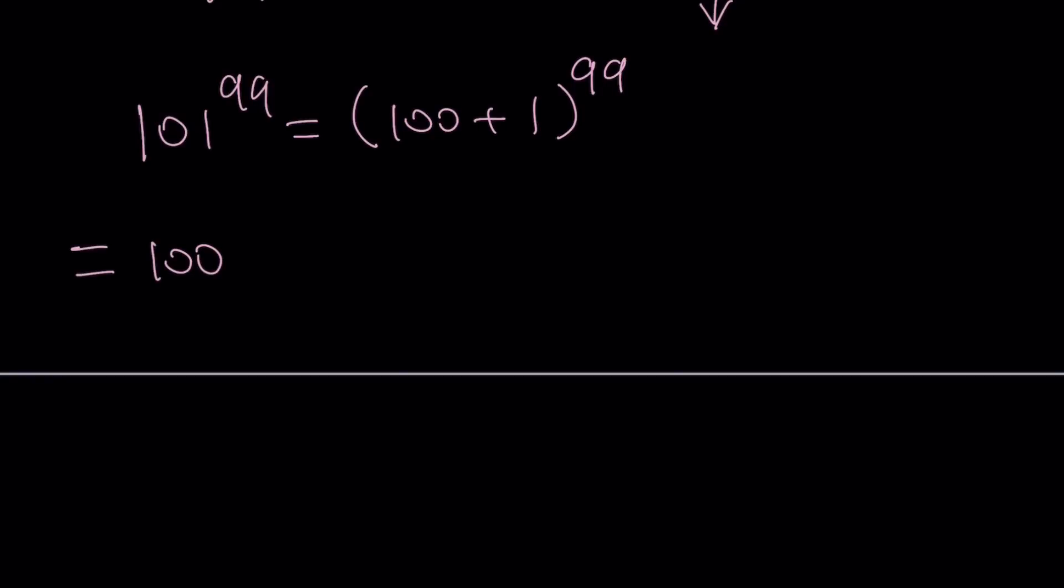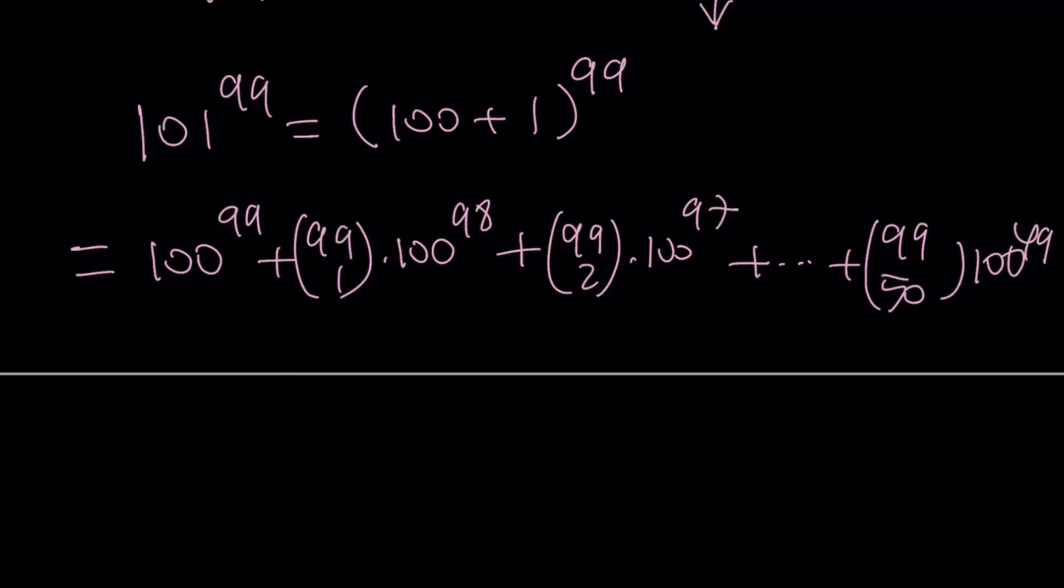So this is going to be, if you use the binomial theorem, you're going to get 100 to the power of 99. And then 99 choose 1, I'm not writing 99 choose 0 because it's just 1, times 100 to the power of 98. And I'm not writing the powers of 1 because they're just 1. So let's just simplify this. Times 100 to the power of 97, so on and so forth. Hopefully you are familiar with the binomial theorem. And we're going to have this guy in the middle, 100 to the power of 49. That's usually the largest number.